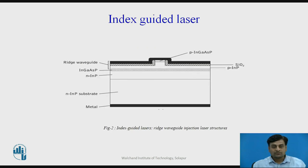The next type of structure is index guided lasers. The drawbacks associated with gain guided laser structures were largely overcome through the development of index guided injection lasers. In some such structures with weak index guiding, the active region waveguide thickness is varied by growing it over a channel or ridge in the substrate as shown in figure number 2.